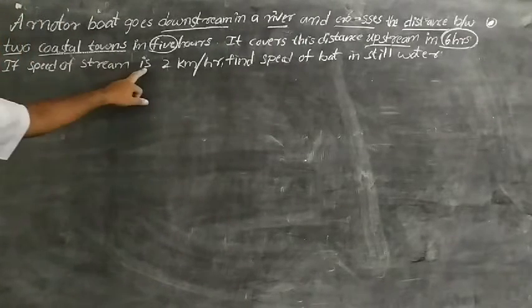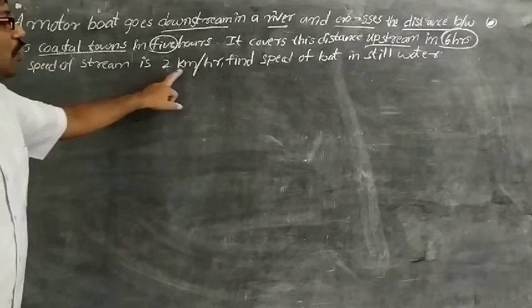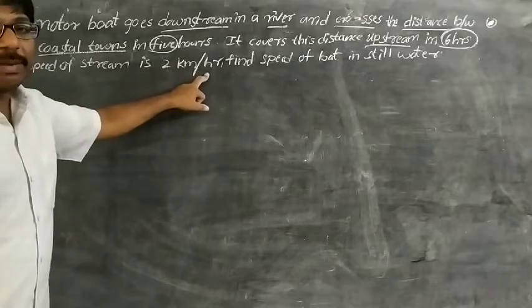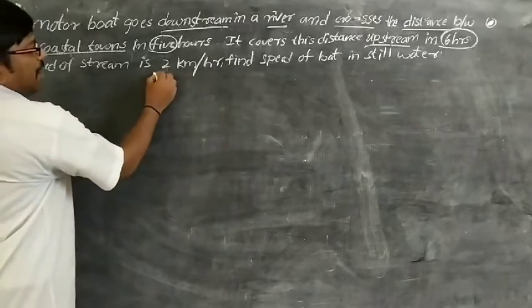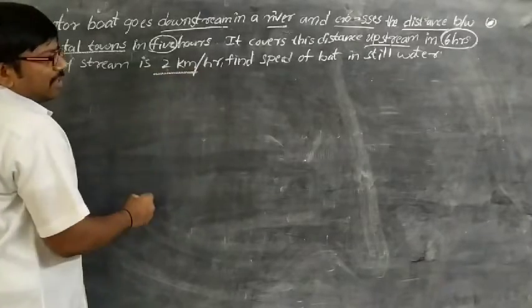The speed of the stream is given as 2 km per hour. We need to find the speed of the boat in still water.